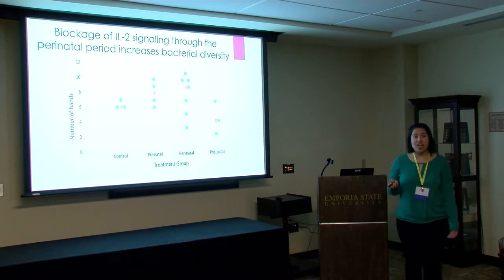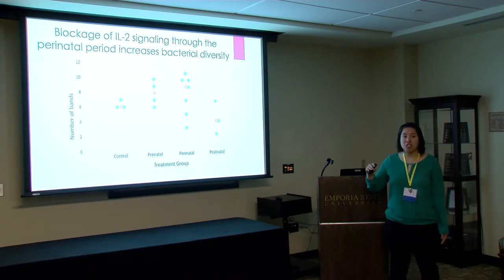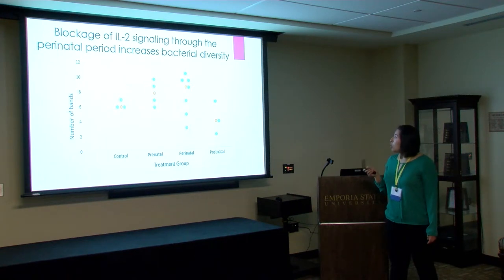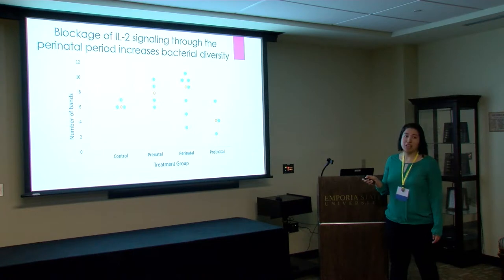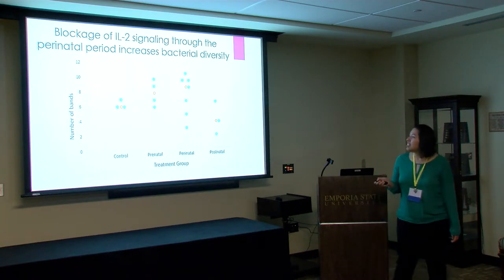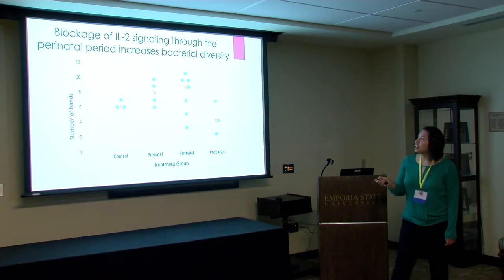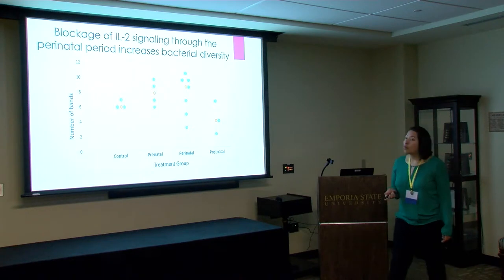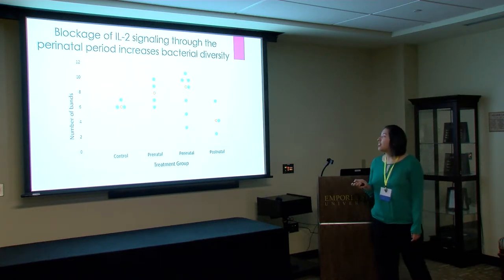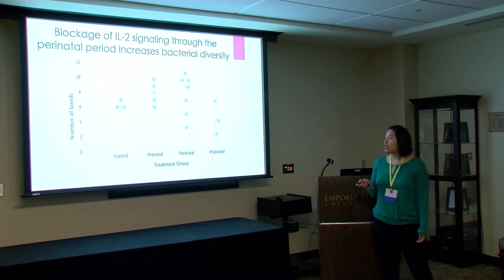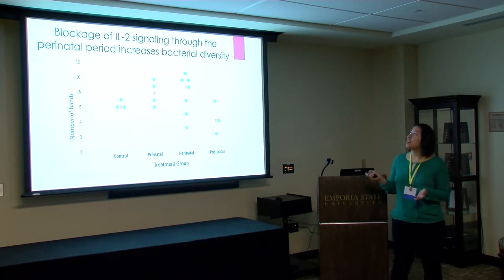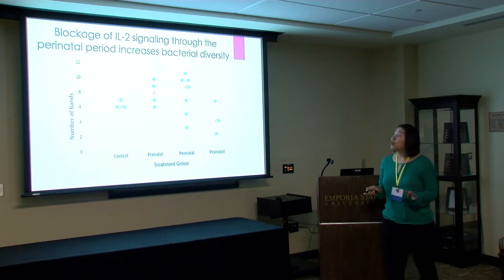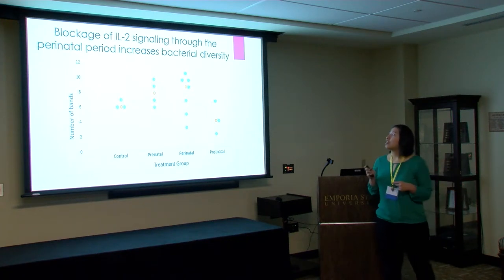We analyzed that gel using software that counts the bands for every treatment — we used software instead of counting manually to eliminate bias. Each dot is one sample and the orange dot is the median. The prenatal and perinatal groups appear to have the higher number of bands, indicating greater bacterial diversity, while the postnatal group has lower diversity. Statistical analysis found that only the perinatal group is significantly different from the control. Therefore, blocking interleukin-2 signaling through the perinatal period, from day 0 to day 20, increases bacterial diversity.